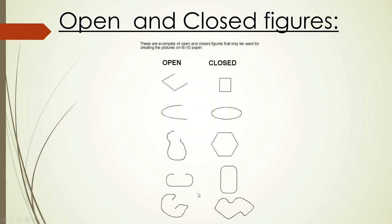Here we have some examples of open and closed figures. Under the open figures, we can see all of them have the starting and ending points as different. But for closed figures, the starting and ending points are all the same.